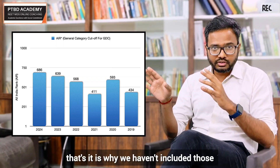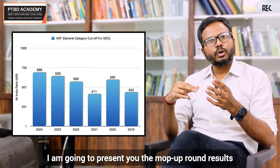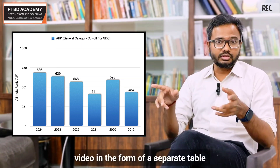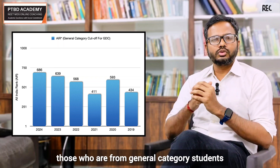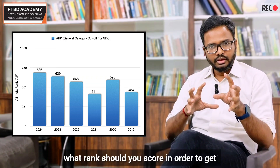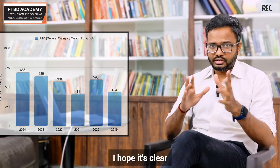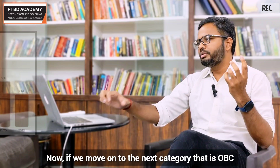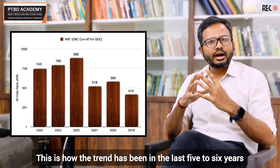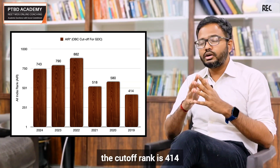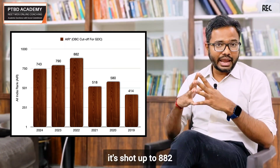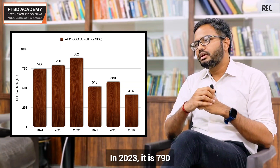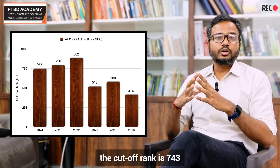In 2023 the cutoff is 639 and in 2024 it is 686, based on the final round of counseling results from MCC's official website. We haven't included mop-up or stray round results in this chart because those seats only remain by chance after the final round — we'll present those separately at the end. For OBC category, the trend has been: 2019 cutoff rank 414, 2020 it is 580, 2021 it's 518, 2022 it shot up to 882, 2023 it is 790, and 2024 it is 743.